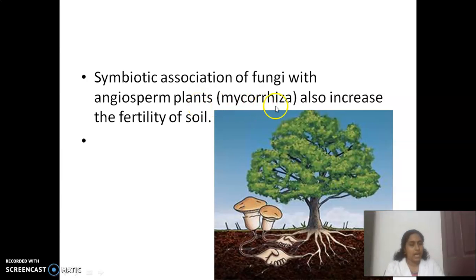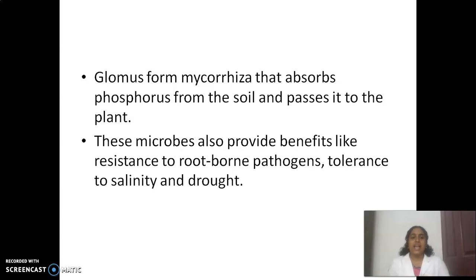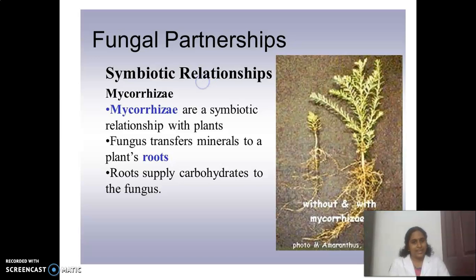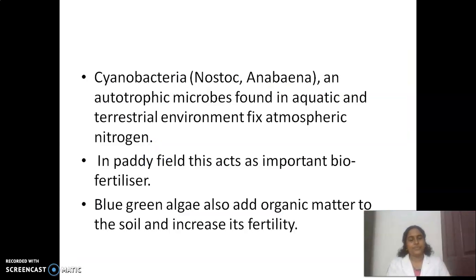Third example: the symbiotic association of fungi with angiosperm plants is called mycorrhizae, which also increases soil fertility. Glomus forms mycorrhizae that absorb phosphorus from the soil and pass it to the plant. These microbes also provide benefits like resistance to root-borne pathogens, tolerance to salinity and drought. Mycorrhizae transfer minerals to plant roots, and roots supply carbohydrates to the fungus.